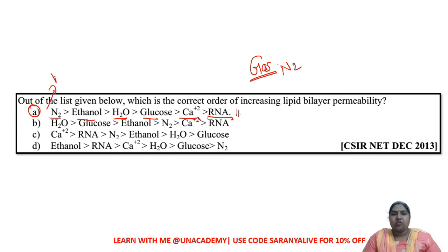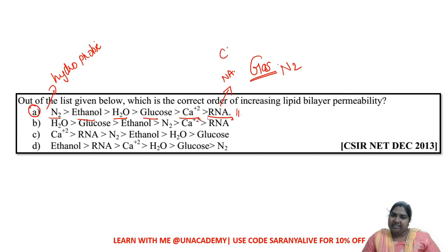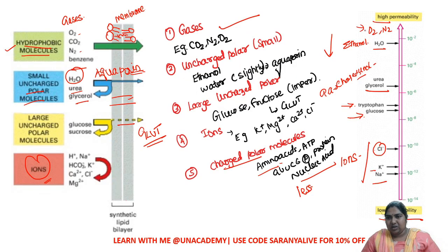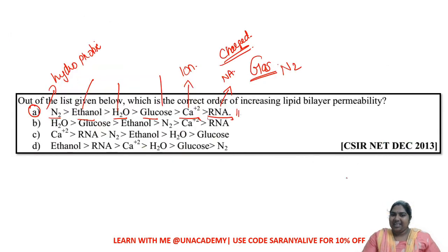So the order is now very clear: gases are highly hydrophobic, and nucleic acids are highly hydrophilic and negatively charged, making them very difficult to pass through. Calcium is an ion, then glucose, then water, then ethanol — you can correlate it: gases, ethanol, glycerol, glucose, then ions.